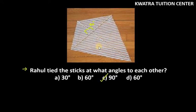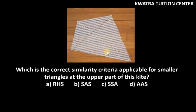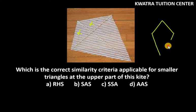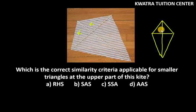Now let's do the second part. The second part asks: which is the correct similarity criteria applicable for the smaller triangles at the upper part of this kite? We are talking about two triangles, so let's make a rough figure of the kite. The first thing we know is that the angle at the diagonal intersection is 90 degrees.